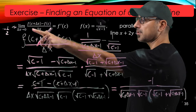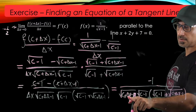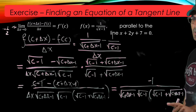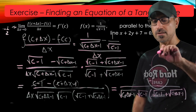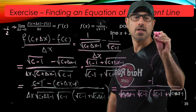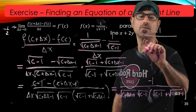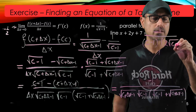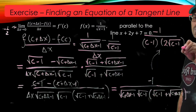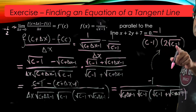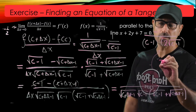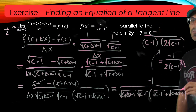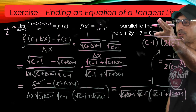As Δx approaches 0, this term becomes (c + 0 minus 1), so it's radical(c minus 1). We now have radical(c minus 1) times radical(c minus 1) plus radical(c minus 1), which is (c minus 1) times 2·radical(c minus 1). That equals 2·(c minus 1)^(3/2). So the derivative simplifies to negative 1 over 2(c minus 1)^(3/2).